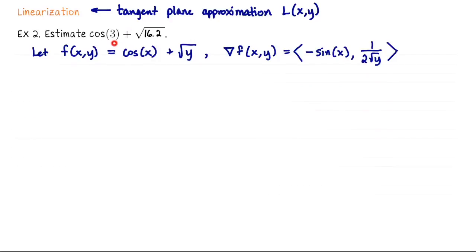Notice 3 is near π and 16.2 is near 16, which are easier to plug into f. So cos(3) + √16.2 ≈ f(π,16) = cos(π) + √16 = -1 + 4 = 3. That's one approximation, but can we do better?